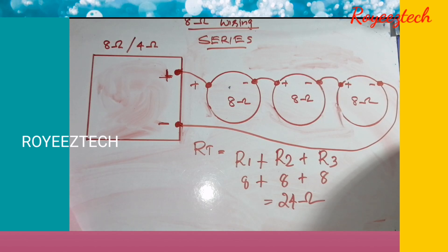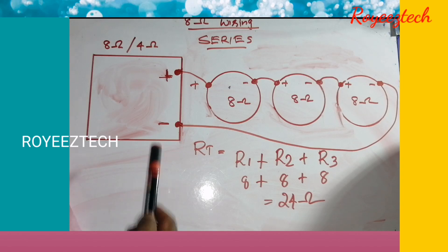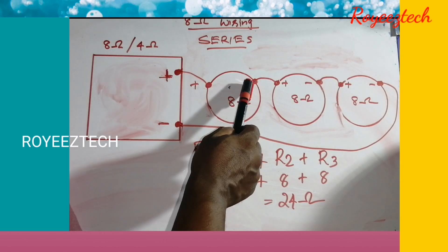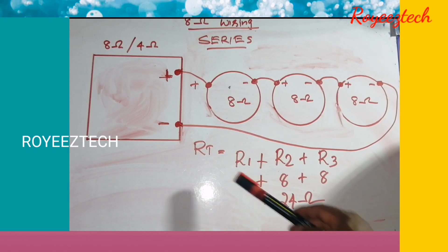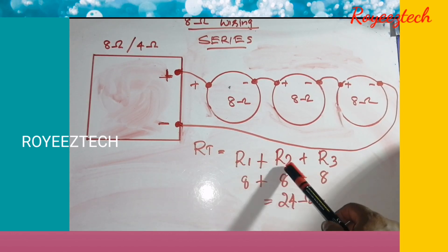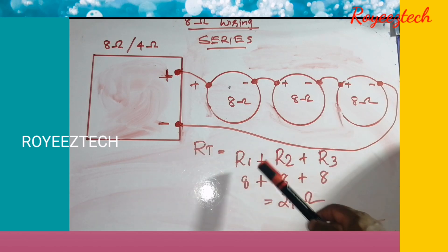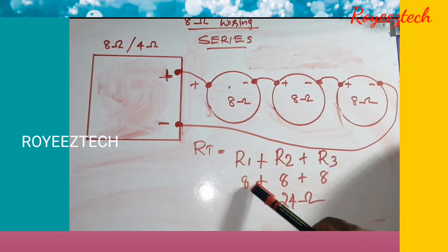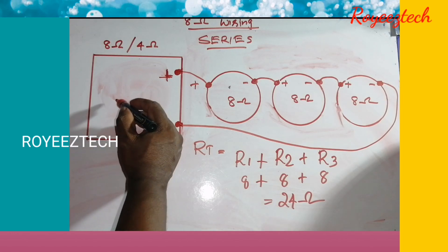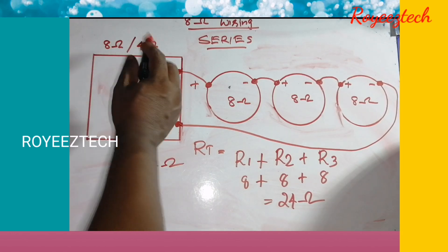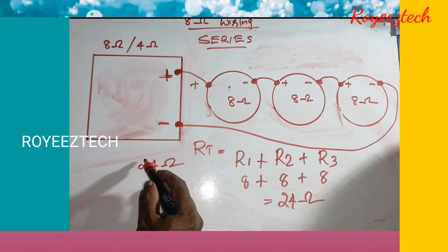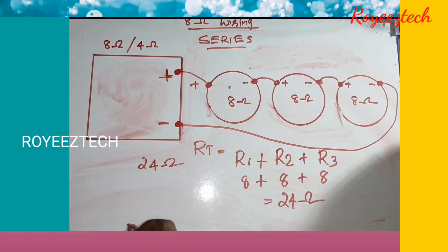In this case, if we use parallel connections and then switch to series connection, the total resistance is calculated as R1 plus R2 plus R3, which equals 8 plus 8 plus 8, giving a total of 24 ohms. That is the total output impedance — 24 ohms.